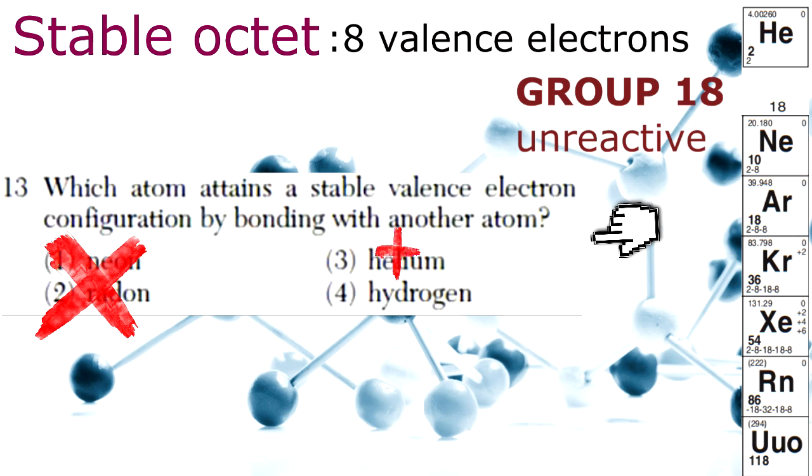It also wouldn't be helium from Group 18, because it's already reached its capacity for balanced electrons as a stable duet. That leaves us with the only answer left, number four, hydrogen.